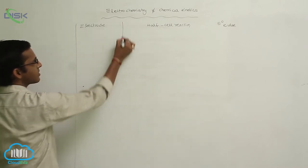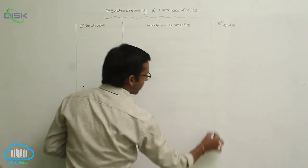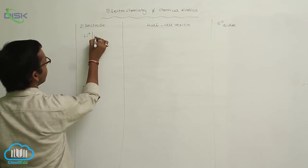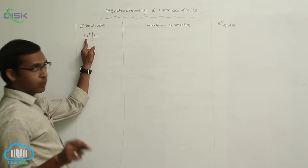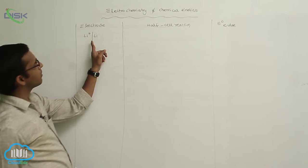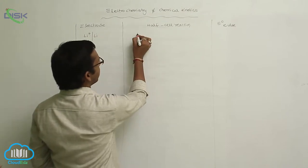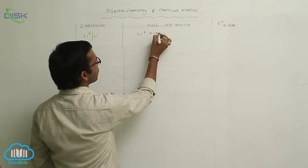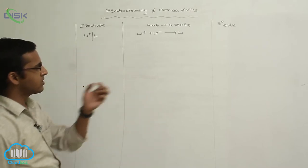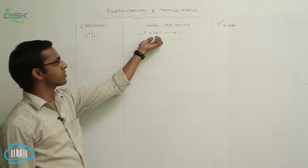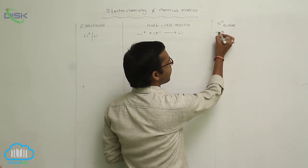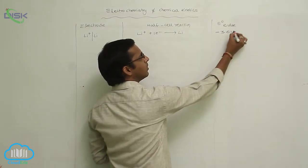The standard EMF values start with the standard reduction potential. For lithium, we write Li⁺ | Li — the metal ion followed by the metal, separated by a vertical line. Li⁺ gains one electron and is converted to lithium metal. Gaining of electrons is called the reduction process. The E° value for lithium is −3.6 V.